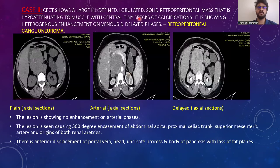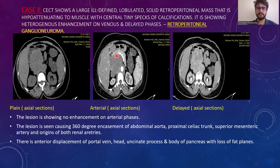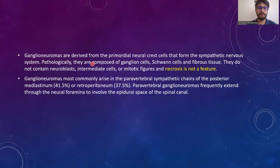Case 2: CCT shows a large well-defined lobulated solid retroperitoneal mass, hypoattenuating to muscle, with central tiny specks of calcifications, showing heterogeneous enhancement on venous and delayed phases. This is a case of retroperitoneal ganglioneuroma. The lesion shows no enhancement on arterial phases and causes 360-degree encasement of the abdominal aorta, celiac trunk, superior mesenteric artery, and origins of both renal arteries, with anterior displacement of the portal vein, head, uncinate process, and body of pancreas. Ganglioneuromas are derived from the primordial neural crest cells forming the sympathetic nervous system, composed of ganglion cells, Schwann cells, and fibrous tissue, without neuroblasts or necrosis. They most commonly arise in paravertebral sympathetic chains of the posterior mediastinum or retroperitoneum.